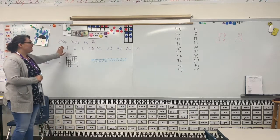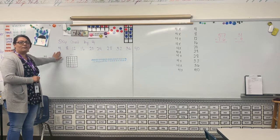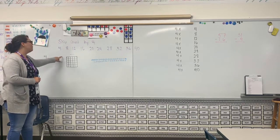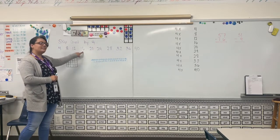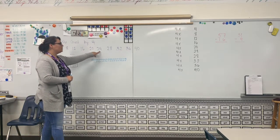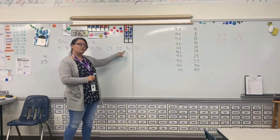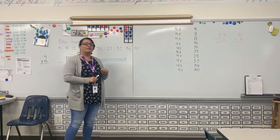But we're going to look at that right now and to skip count by fours I want you to do it with me. Here we go. Four, eight, twelve, sixteen, twenty, twenty-four, twenty-eight, thirty-two, thirty-six, and forty.